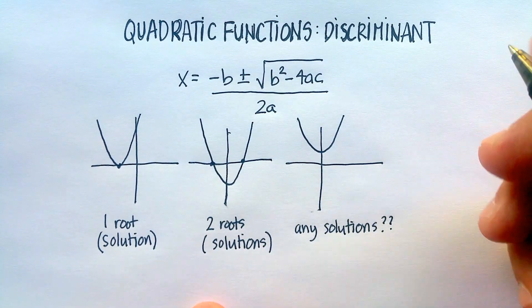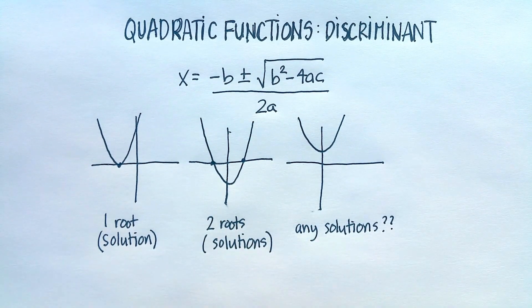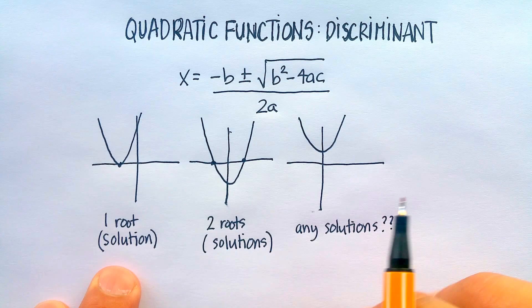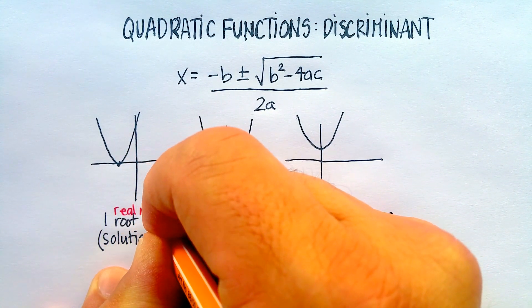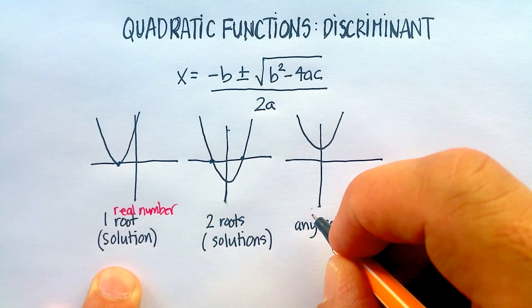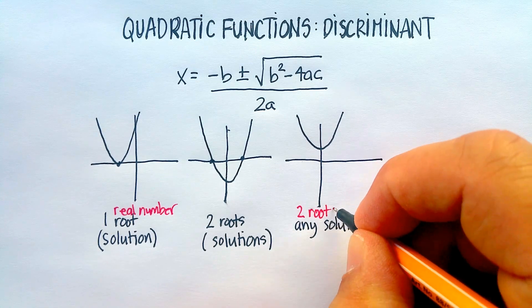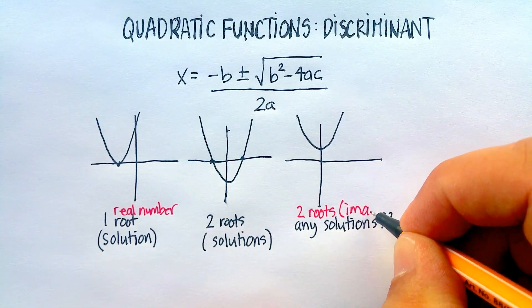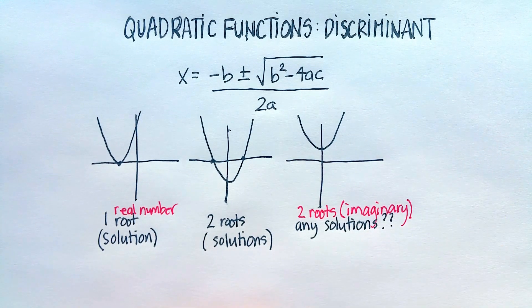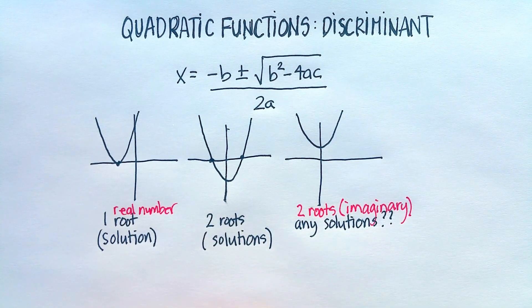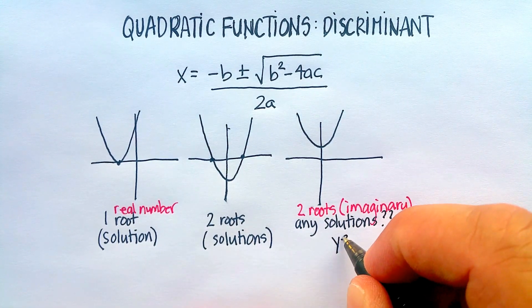The answer is yes. There are solutions, but they are not real numbered solutions. So let's make a distinction between a real number root. In this case, you're going to have two roots, but the roots are imaginary numbers.